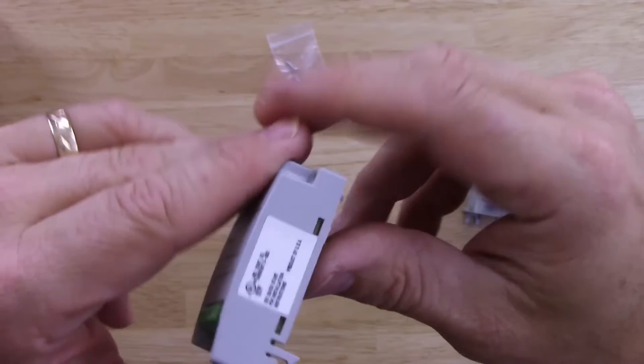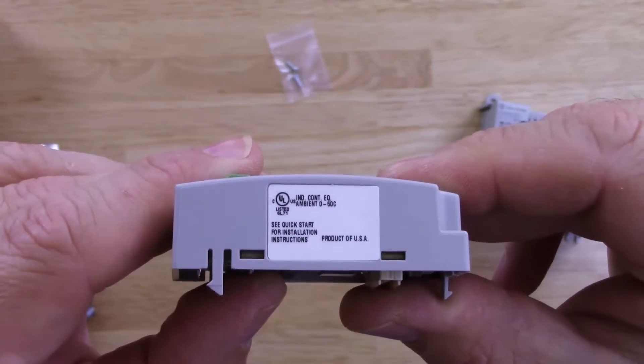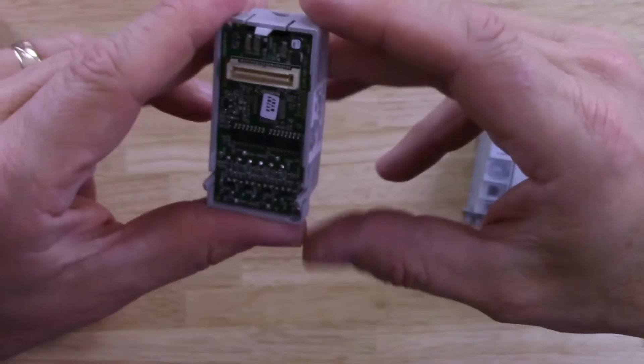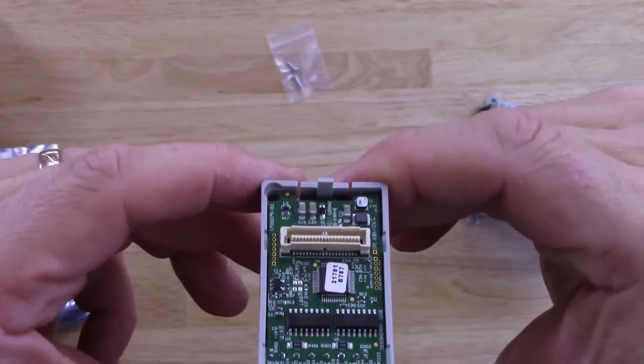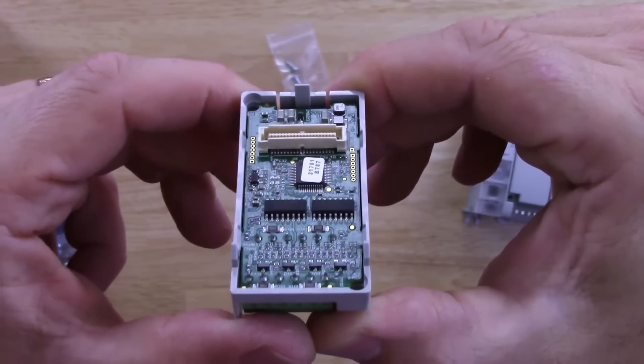Nothing on the top. Well, what's this? Another label here. Take a look at the back. You can see the connector and the plastic tabs that hold it in, along with the screw holes.